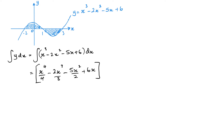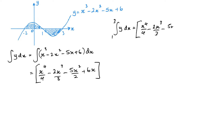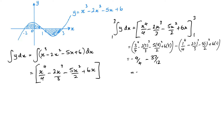What I want to do is integrate first between 3 and 1, which will be for this negative area here. So now I can just put this straight in: x to the 4 over 4 minus 2x cubed over 3 minus 5x squared over 2 plus 6x, between 3 and 1. And this will give me minus 16 over 3.